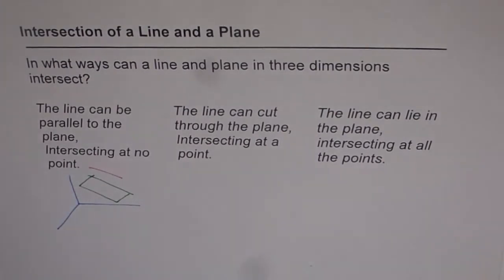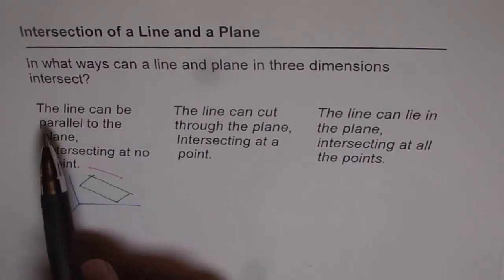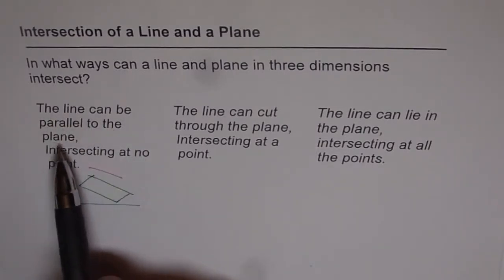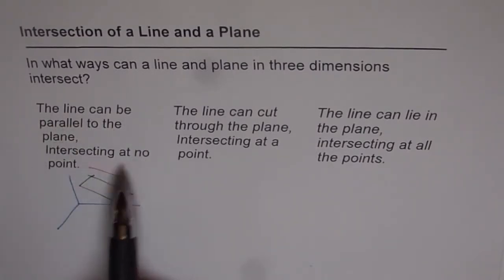Now in this case there is zero point of interaction, no point of intersection, and that is one case which we have. So we have here: the line can be parallel to the plane, intersecting at no point.